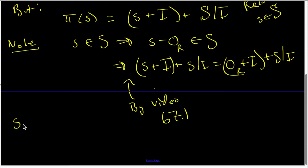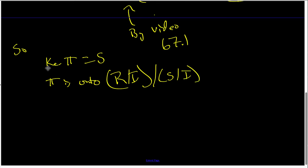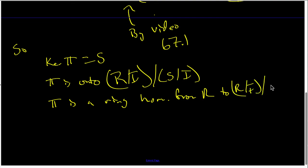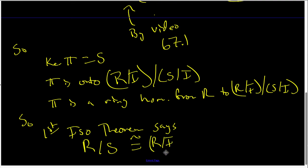So what we now have is that the kernel of π is indeed equal to S. We know that π is onto R mod I mod S mod I, and we know that π is a ring homomorphism from R to R mod I modded out by S mod I. So the first isomorphism theorem says R mod the kernel of π — in other words, R mod S — is isomorphic to the target ring R mod I modded by S mod I. And that completes the proof of the third isomorphism theorem for rings.